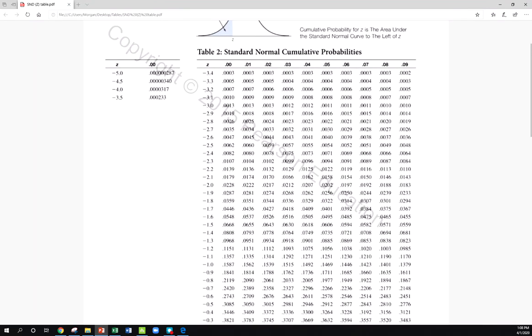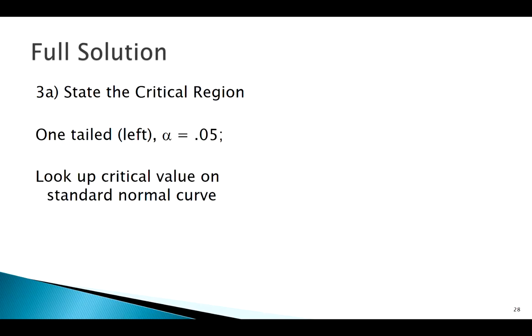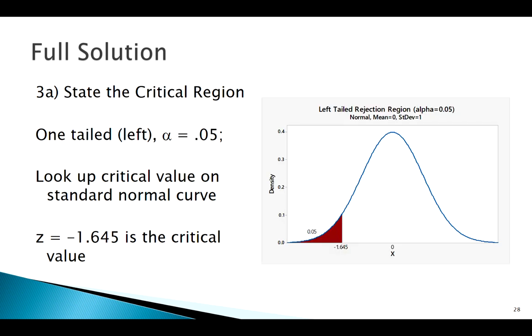I would go to my table here, find 0.05. I've got something pretty close here to 0.05. What we usually use for 0.05 to the left is negative 1.645. And my rejection region is going to be the area to the left of negative 1.645.